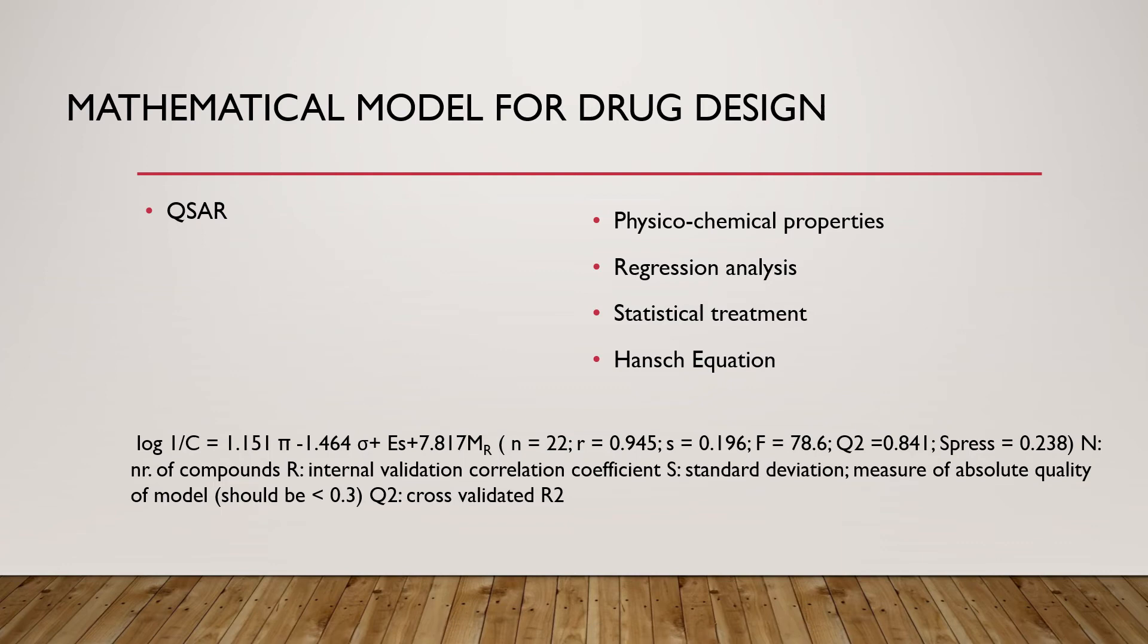It is related by Hansch equation which is here. The constant values are regression coefficients; they are calculated by the computer actually. QSAR databases are available from which the values of pi, sigma, Es, and Mr for each substituent can be calculated or obtained.